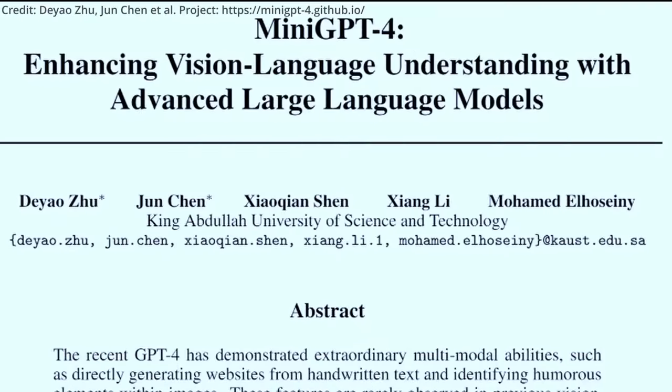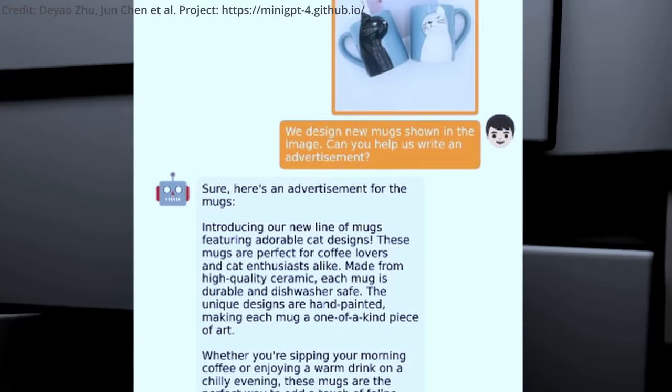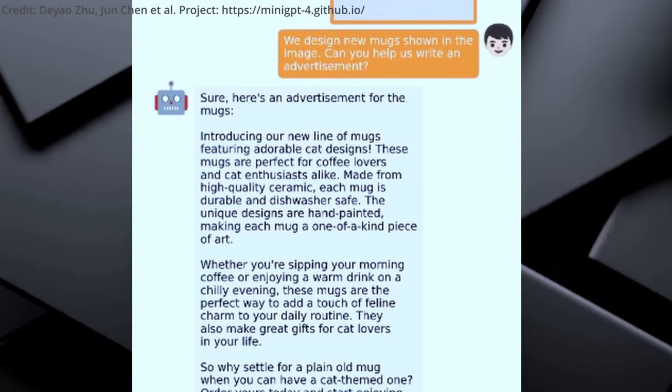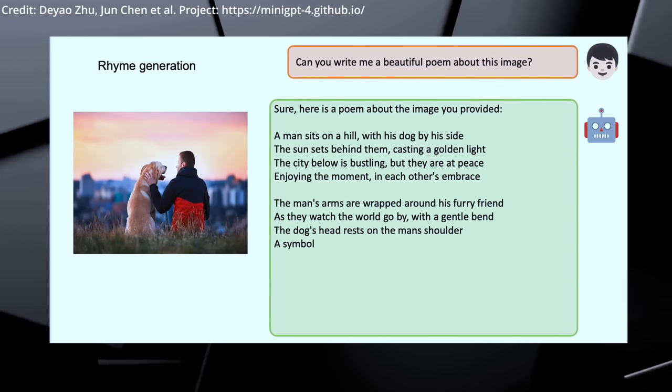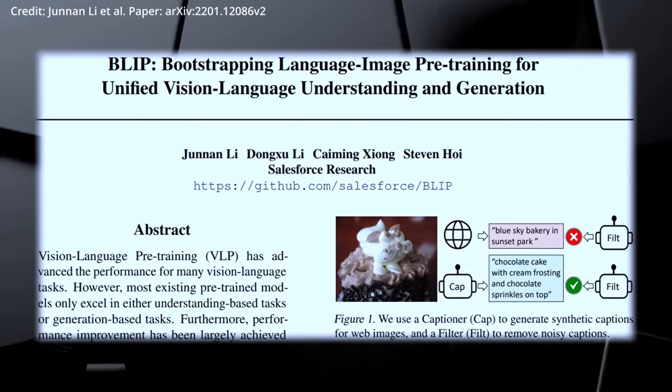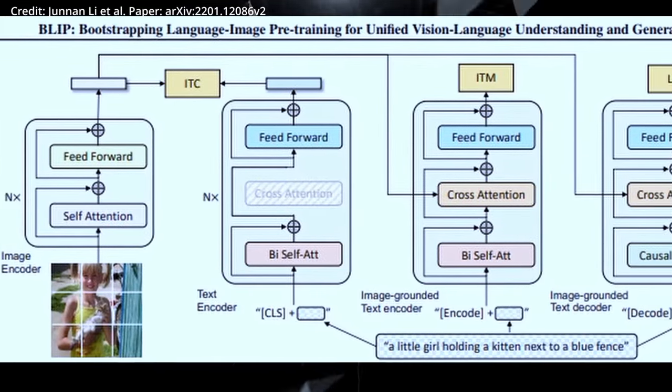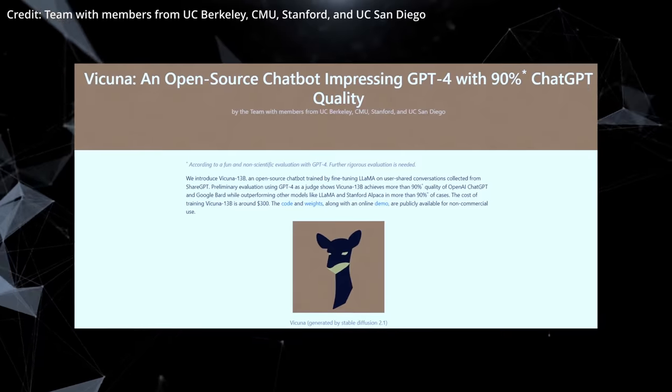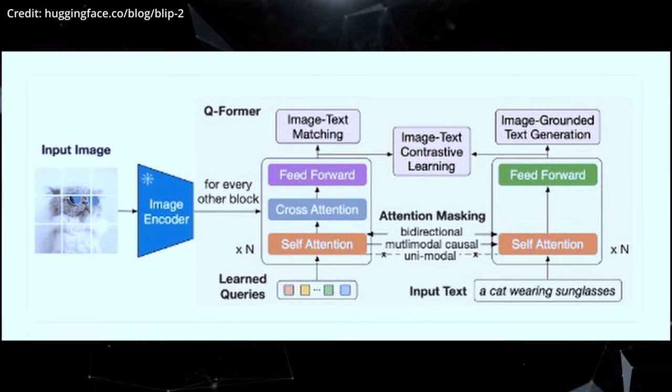Created by a group of Ph.D. students at King Abdullah University of Science and Technology in Saudi Arabia, Mini-GPT4's Vicuna Large Language Model is based on LLAMA and reportedly attains 90% of ChatGPT's quality as assessed by GPT-4. The model incorporates the pre-trained vision component from bootstrapping language image pre-training and introduces a single projection layer to align the encoded visual features with the Vicuna Language Model while keeping all other vision and language components frozen.